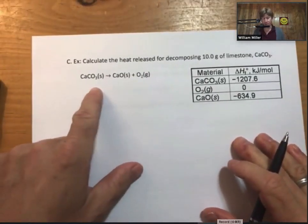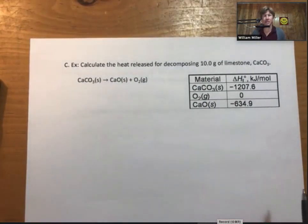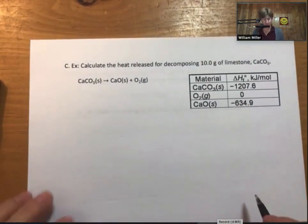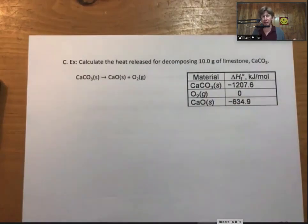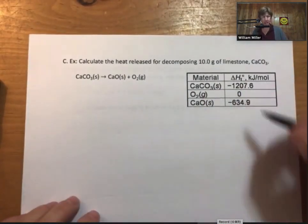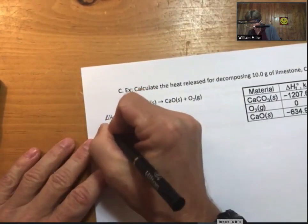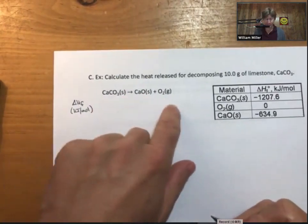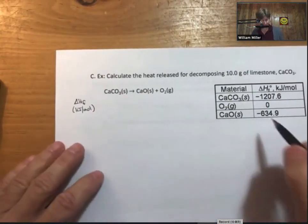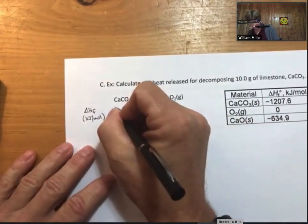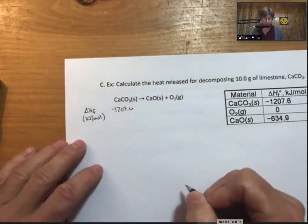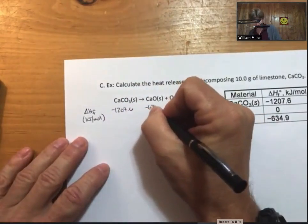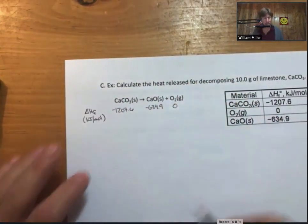Let's do another one. This one is calculate the heat released for decomposing 10.0 grams of limestone calcium carbonate. In this particular one, very typical problem. You have to calculate delta H reaction from delta HF values and then use that for stoichiometry. My system for doing that is to write the delta HF values underneath each of them. So, calcium carbonate, calcium oxide, oxygen is zero.